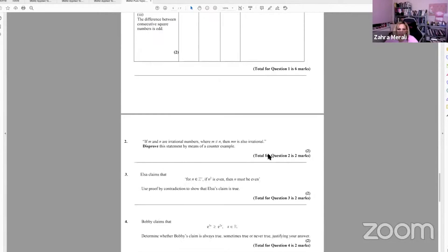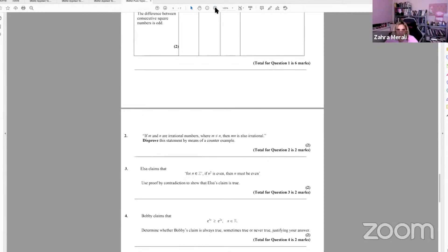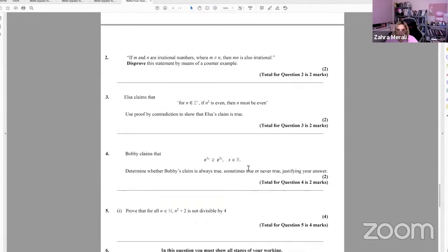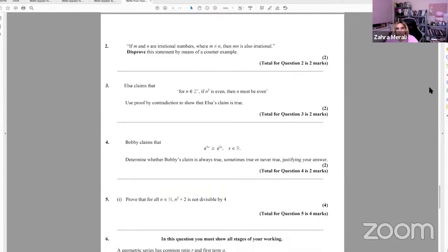But remember, you're only ever - I know you're doing a whole page of them - but you're only ever going to get, you know, one proof question. The clue is usually in the amount of marks. So here, it's saying to disprove by counterexample, just means you need to pick some numbers. So if m and n are irrational numbers, mn is also irrational. Okay, so an irrational number is like a square root number.